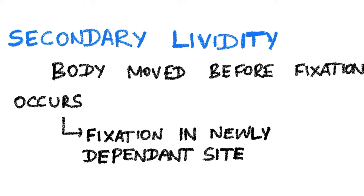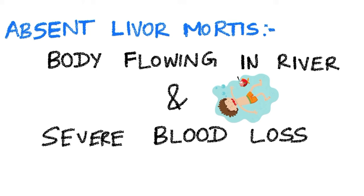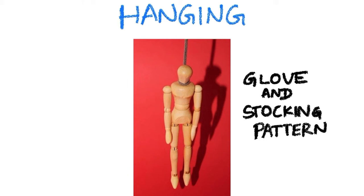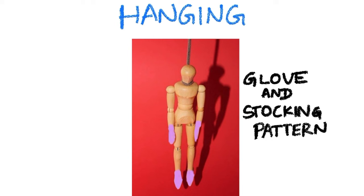In certain conditions, livor mortis may be absent. If a dead body is flowing continuously in a river — as in drowning — continuous position changes prevent staining from forming. In cases of severe blood loss, there is inadequate blood for staining to occur. A special glove-and-stocking pattern of post-mortem staining is seen in hanging, because the dependent portions in hanging are the hands and feet, where blood pools due to gravity.